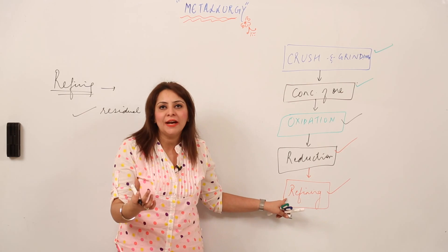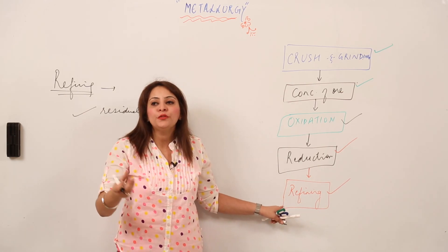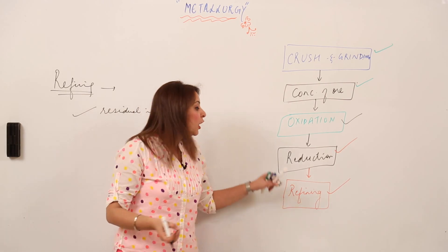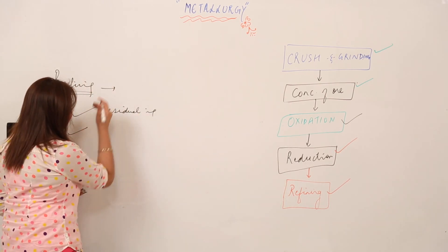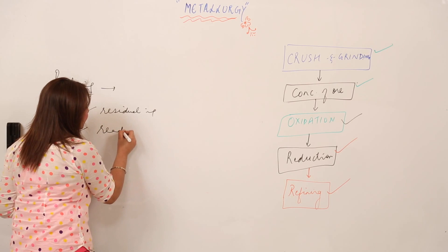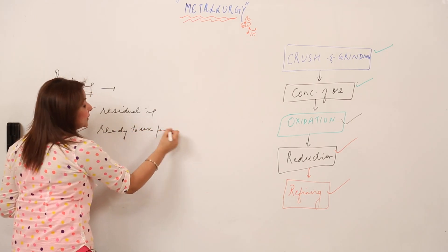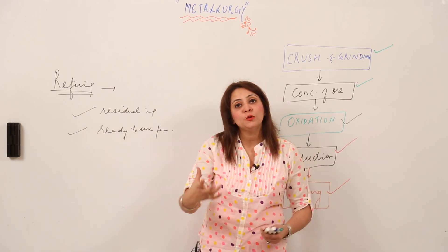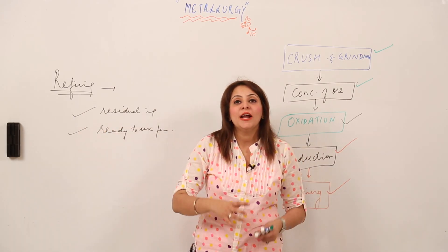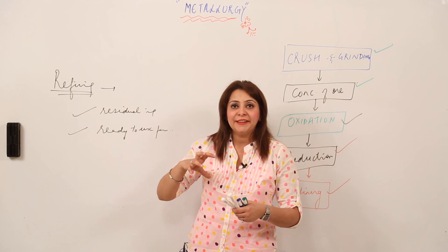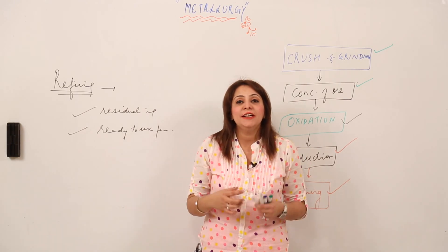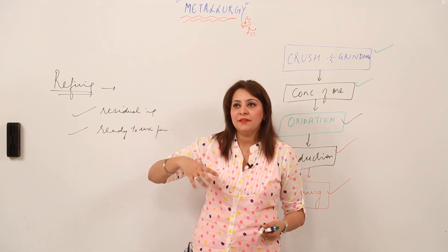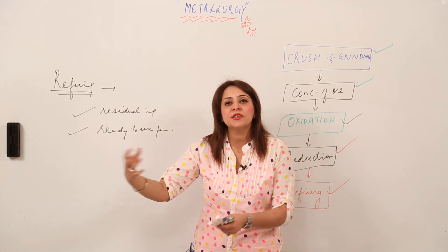So we can refine it to remove traces of impurities. In refining, we can also convert it into ready-to-use form. For example, if I need aluminum foil, I want the foil to be available in the market so I can just buy it.